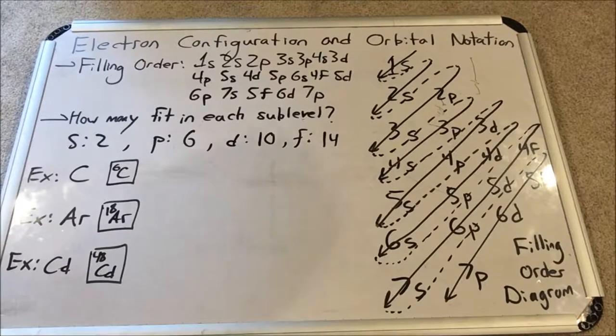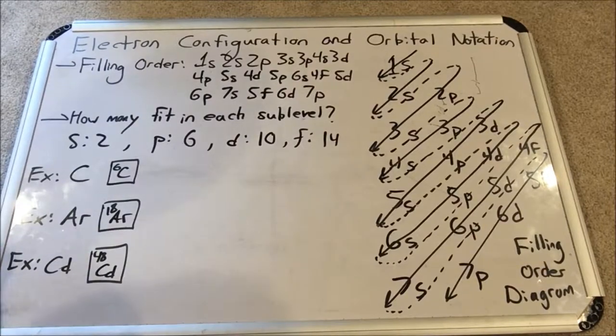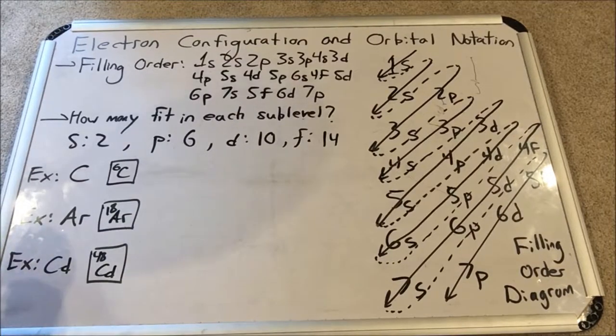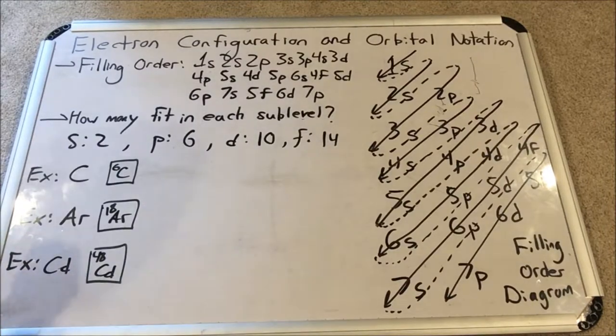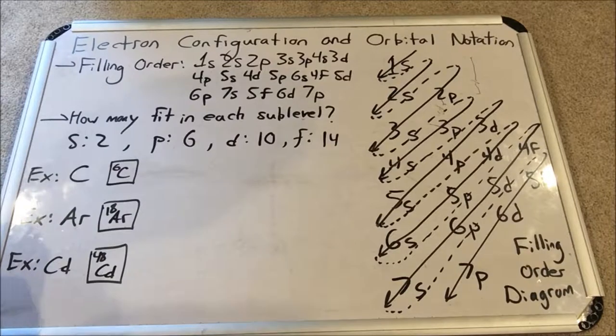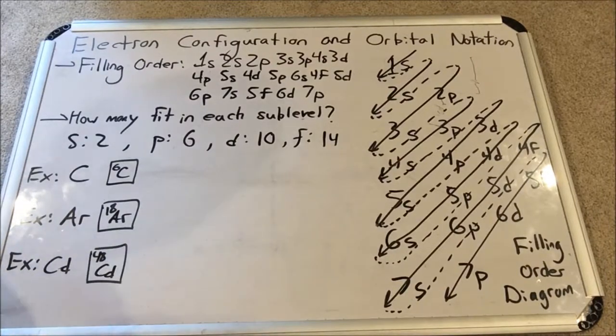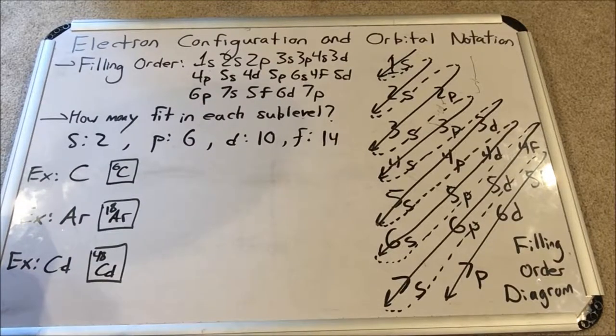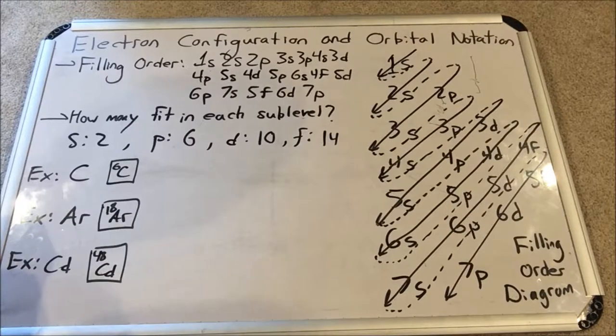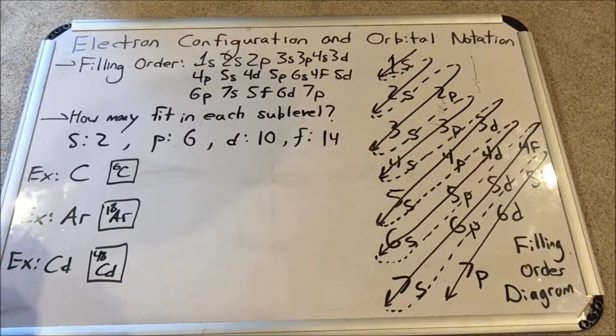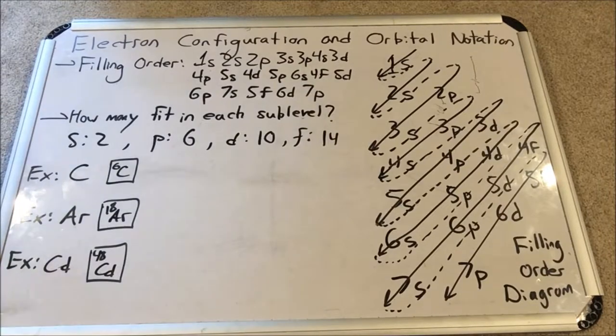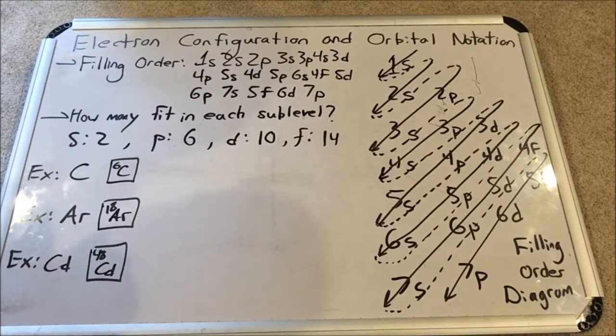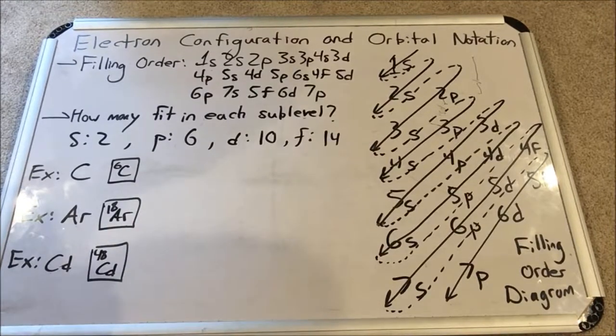What we have to understand is that as we add electrons, meaning we increase our atomic number, the electrons are always going to find the configuration that results in the lowest possible energy for each electron. We tend to default to the most lazy position we could possibly be in. We want to expend the least amount of energy possible. The electrons will do that as well.